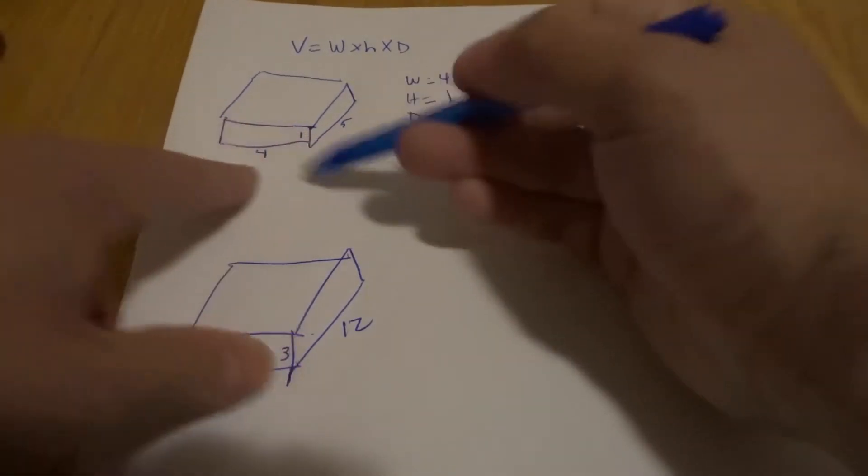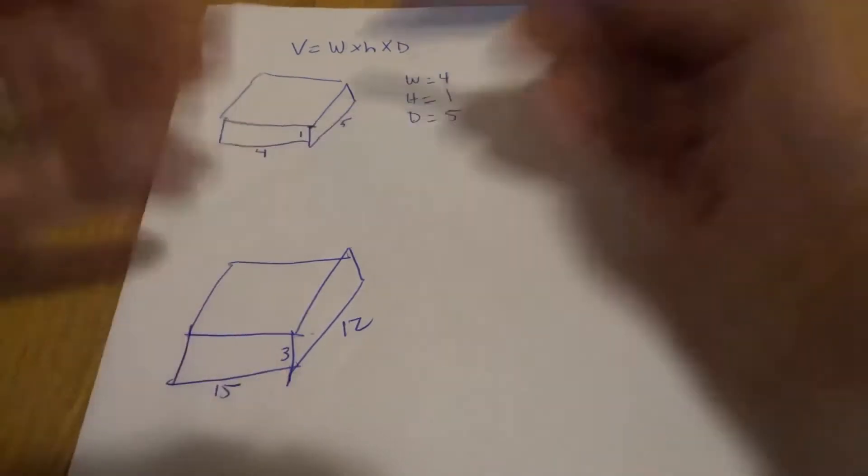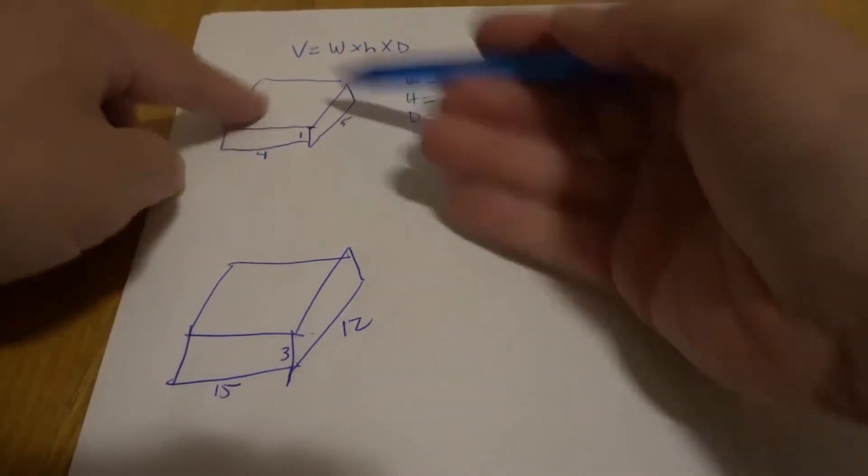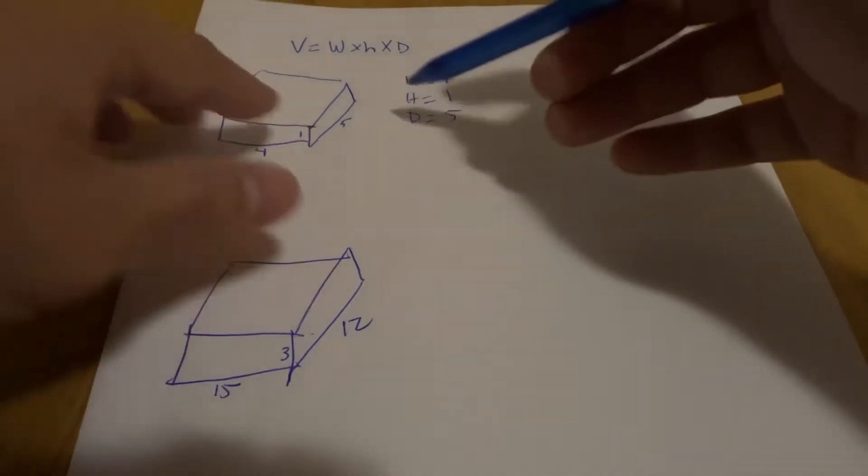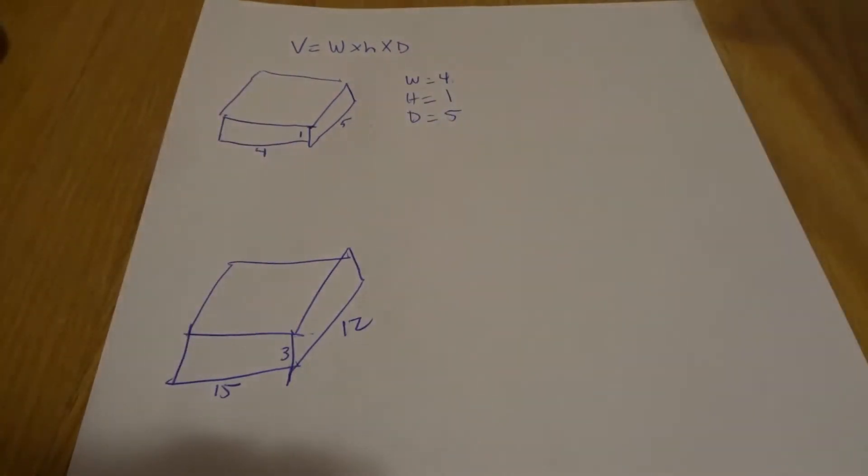To be honest with you, it doesn't really matter which one you consider to be which - your width, depth, or height - because I can turn this box and it would be the other way around, the numbers would all be switched up. As long as you're multiplying those three numbers together, that's all that matters.